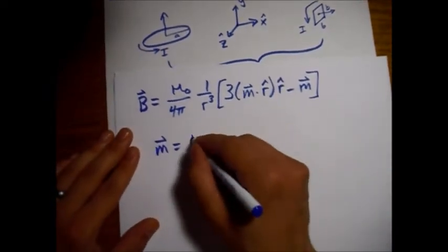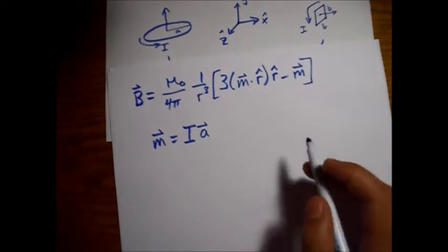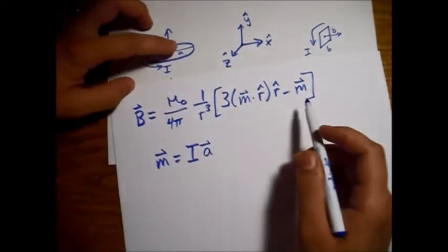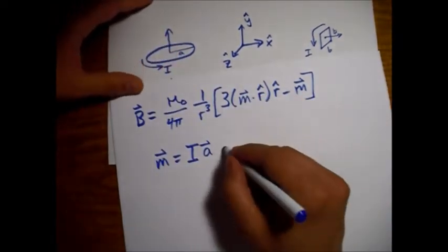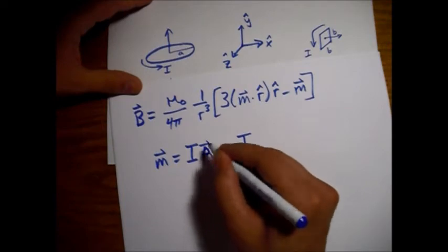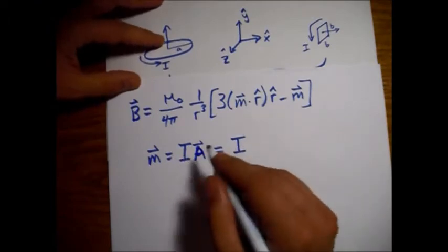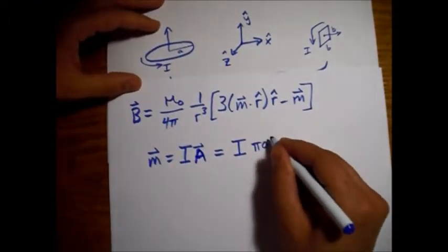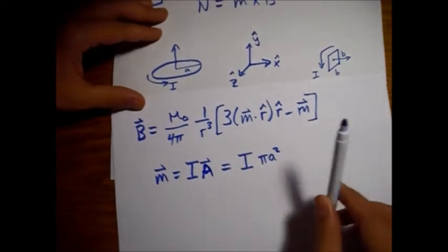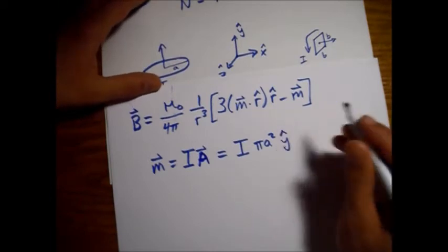And we know that is just I times the area vector. I guess A is a little confusing here, because it's not the same as this A. Let me just make this a capital A to avoid confusion. This is the area vector. So I, and then we need the area of a circle, pi A squared. This time it's the little a, which is the radius of this circle. And the direction for this is straight up or the Y hat direction.